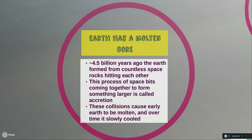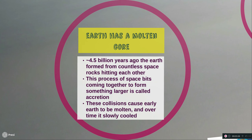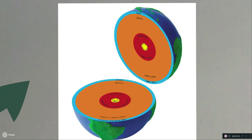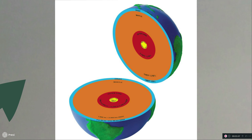With early Earth, all these collisions caused the planet to be pretty hot and molten and completely unsustainable for life. But over time our planet was able to cool, and we now have a cool crust. On the inside of the planet we still have a molten core and a somewhat molten mantle, which is soft because it's hot.